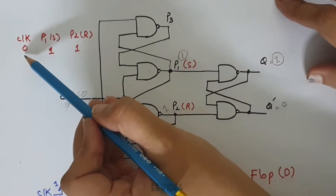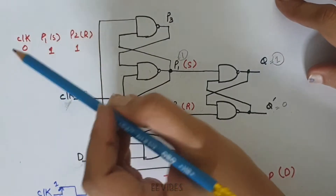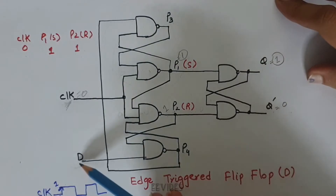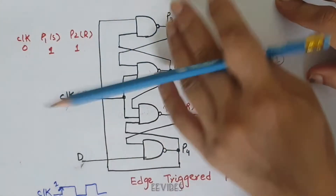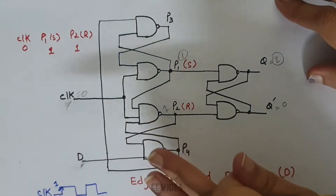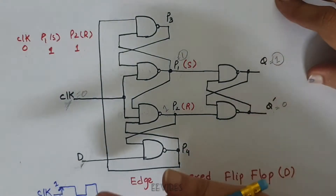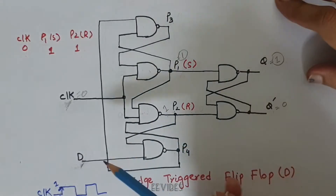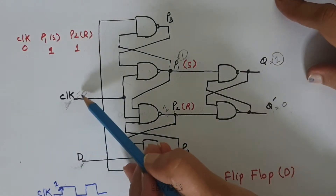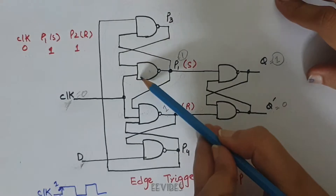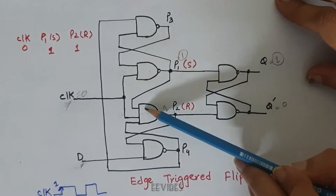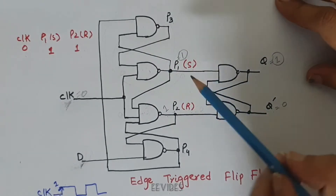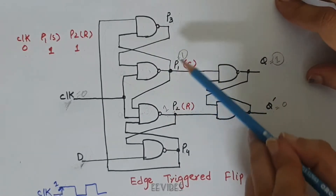As long as this clock signal is equal to 0, the changes introduced by input D will not be transferred at the output side. In other words, this flip-flop is deactivated and doesn't respond to changes in the input. When the clock input is equal to 0, this 0 is common at both NAND gates, which forces inputs S and R to be equal to 1.